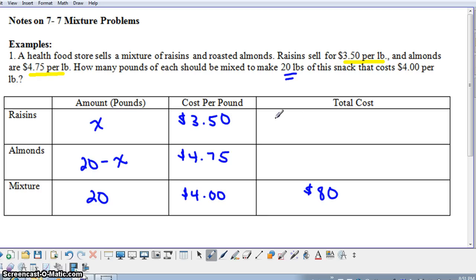The total cost of the raisins depends on how many pounds of raisins we use. If I were to use one pound of raisins, if X was one, the cost would be $3.50 for the raisins. If I was to use two pounds of raisins, two times $3.50 would be $7 for the raisins. But we don't know how many pounds of raisins we're having yet, so we're just going to put $3.50, or 3.5 times X, for the cost of the raisins. We're going to do the same thing here for the cost of the almonds. The cost of the almonds is the number of pounds of almonds times the cost per pound. So here we have 4.75 times the quantity 20 minus X.